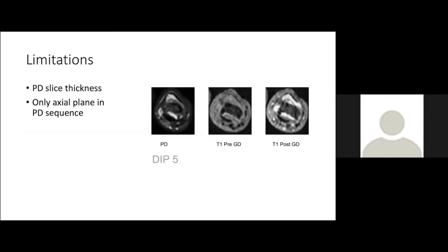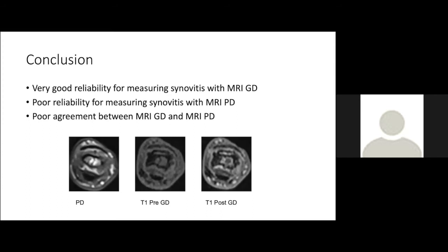The proton density sequence was more difficult to assess than the gadolinium-enhanced images. This was primarily due to the discrepancy in slice thickness, causing information to be lost in the small finger joints in the PD sequence. Furthermore, the PD images were only assessed in the axial plane in the finger joints, while the GD images were assessed in two planes. To conclude, we found very good reliability between three readers for measuring synovitis with gadolinium-enhanced MRI. Reliability for proton density-weighted MRI in finger and thumb base was poor, and we also found poor agreement between gadolinium-enhanced MRI and proton density-weighted MRI.